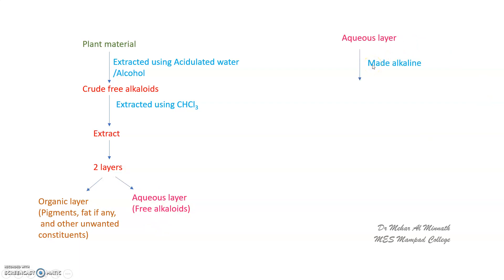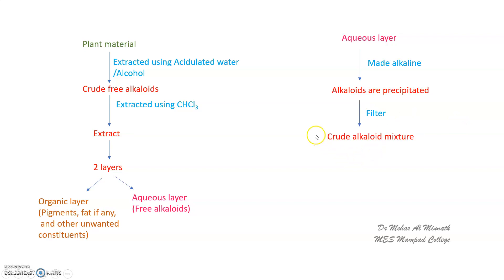The aqueous layer is made alkaline again using ammonia, sodium carbonate, or potassium carbonate, and the alkaloids are precipitated. This precipitate is filtered to obtain the crude alkaloid mixture separately from the filtrate. The crude alkaloid mixture is then purified further by chromatography.